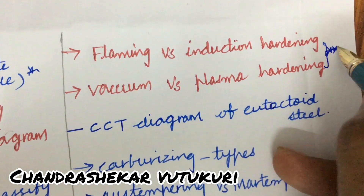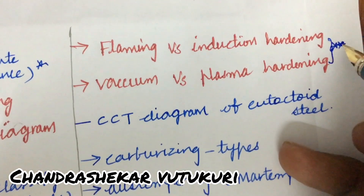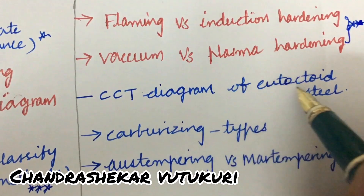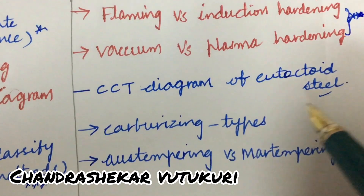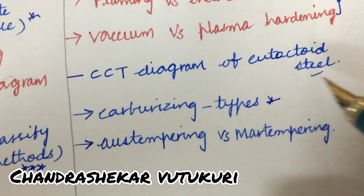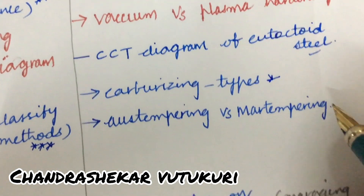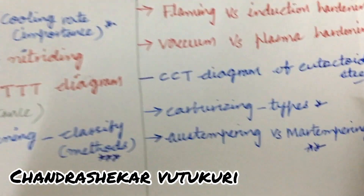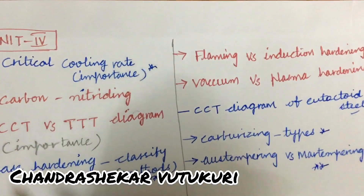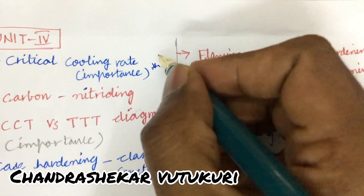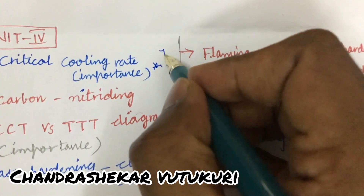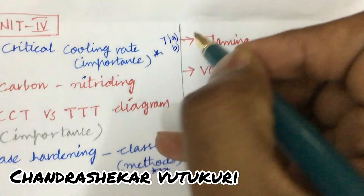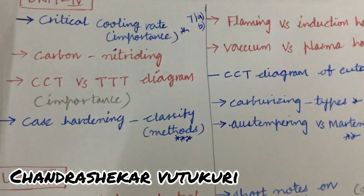From those two parts you will be getting one question for sure. The CCT diagram of eutectoid steel, carburizing and its types, and austempering versus martempering are also said to be very important questions. From this part you will be getting one and a half questions — 6B or 7A as well as 7B sometimes.